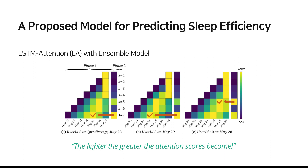The attention scores of two randomly chosen user cases are presented. When observing user ID 8 to predict sleep efficiency values on May 28th and 29th, the most explainable S were 7 on Phase 2, and the most explainable days were both May 25th. Meanwhile, user ID 40 had a different value for the most interpretable S and corresponding attention day compared to user ID 8.